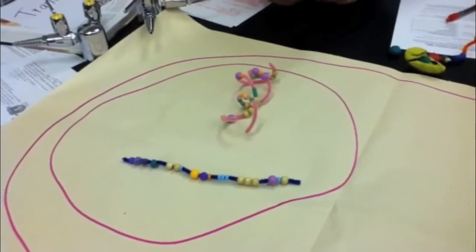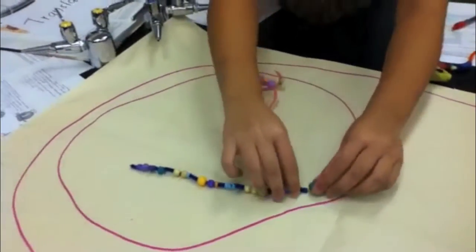On the 3' end, around 50 to 250 adenine nucleotides are added to form a poly-A tail.